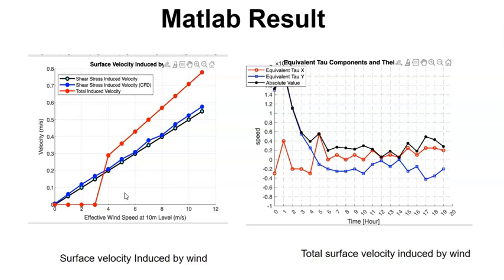On the other graph, which indicates the total surface velocity induced by wind, the X component has a significant peak and drops and the Y has a smoother curve. The absolute value tends to provide the intensity of the combined effect of X and Y components.